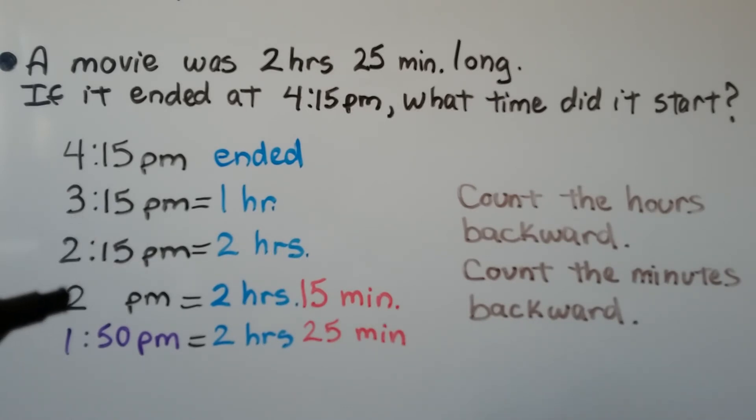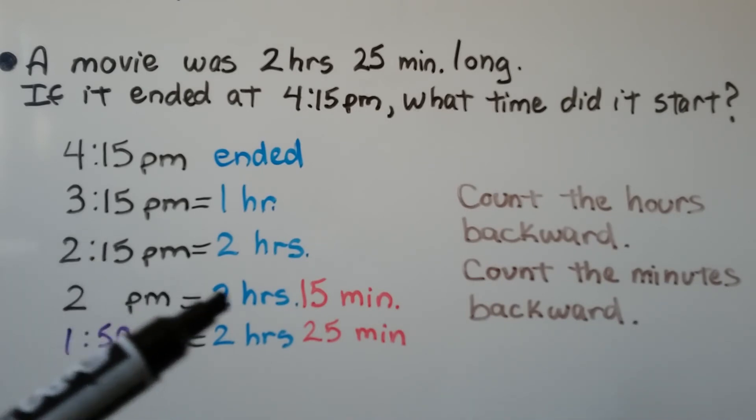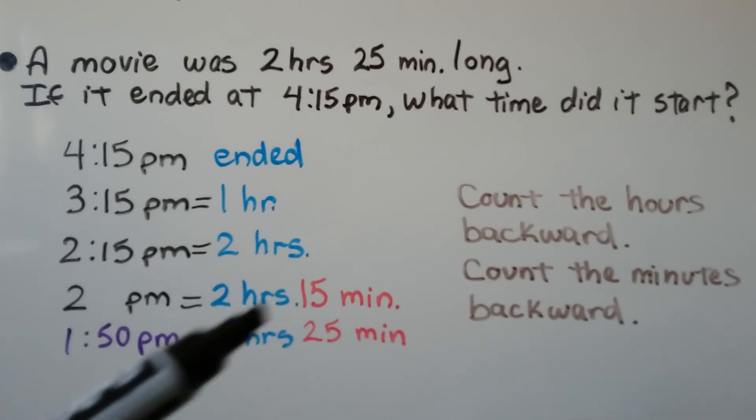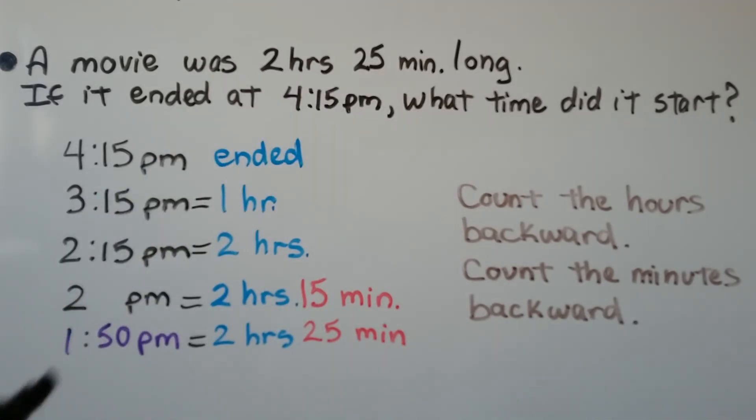We can go to 2 p.m. and by taking that 15 minutes away we now have 2 hours and 15 minutes on this side. And it was supposed to be 25 minutes long so we need to have this go back another 10 minutes to make the minutes a 25. And 10 minutes before 2 p.m. would be 1:50 p.m. So the movie started at 1:50 p.m.